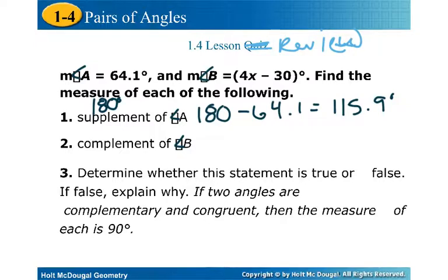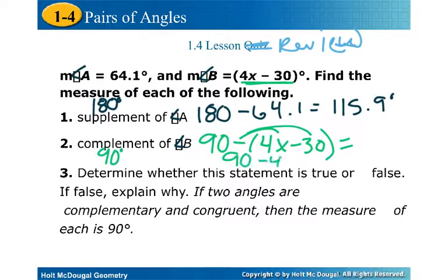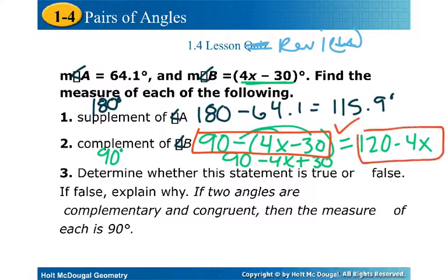180 minus 64.1 would be 115.9, unless I can't subtract very well. I'll grab my calculator. Sweet. And so then the next one is your complement. Remember the complement is 90 degrees. And the complement of B is interesting as well, because it's going to be 90 minus angle B. The problem with angle B is that it's this weird expression. That's okay. That is going to be our answer: 90 minus the expression of 4x minus 30. Since we have all had algebra 1, you could go ahead and actually simplify that. If you distribute this negative, we'd actually have 90 minus 4x plus 30, so technically 120 minus 4x.